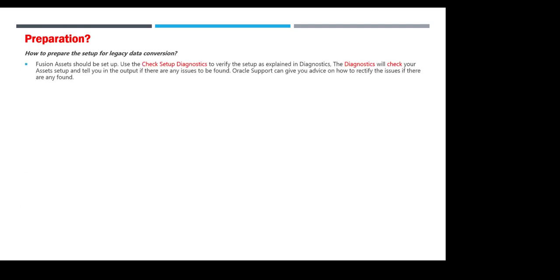To prepare the setup for legacy data conversion, Oracle Assets should be set up first — you have to set up your categories (major and minor), asset books, depreciation methods, key flexfields for location, units, employee, and so on. You must complete all of this before preparing or getting data from legacy systems and putting it into your FBDI, ADFDI, or Excel template. Once the setup is finished, there is a checkup setup diagnostics tool to verify the setup is correct.